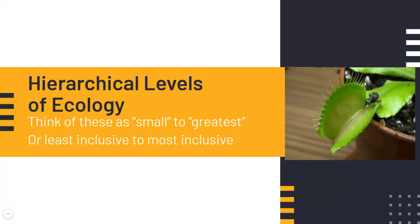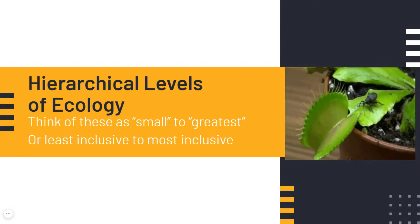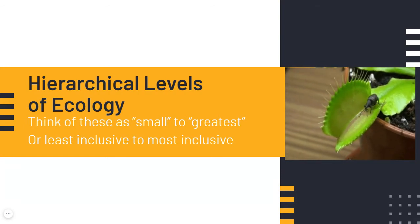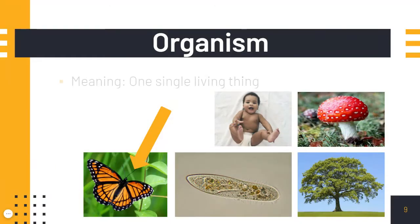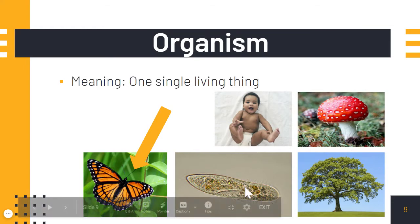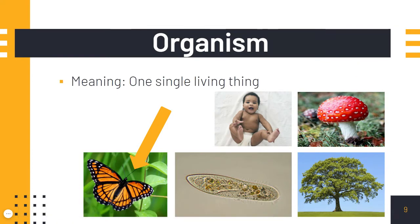I want to go through the hierarchical levels of ecology — things that might seem small or more specific, to large and most inclusive. Organism: one single living thing. There are one-celled organisms, like that paramecium in the middle, but it can also be a mushroom, a butterfly, a tree. Draw a picture in your notebook.